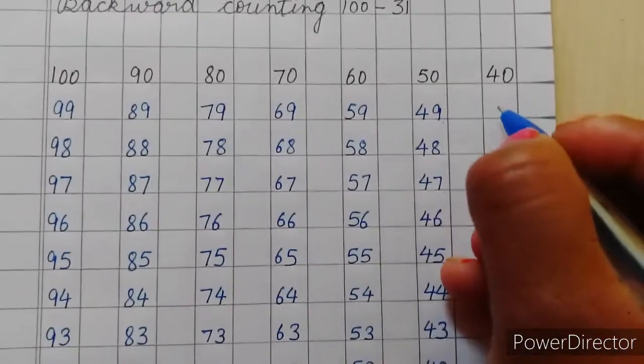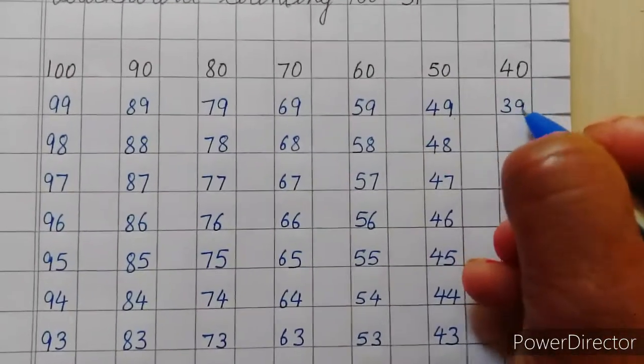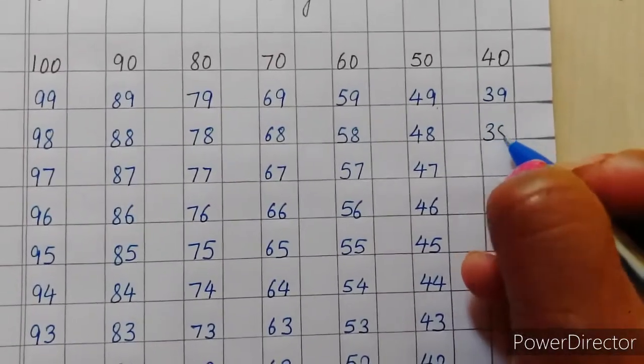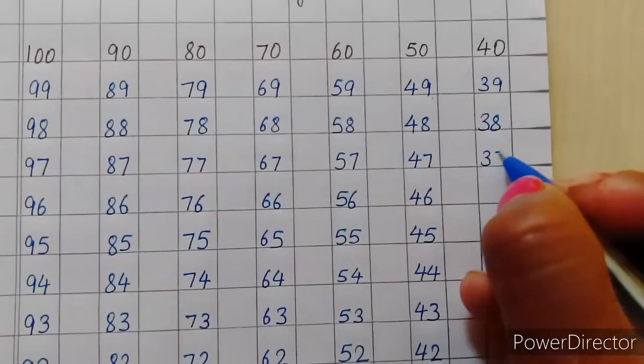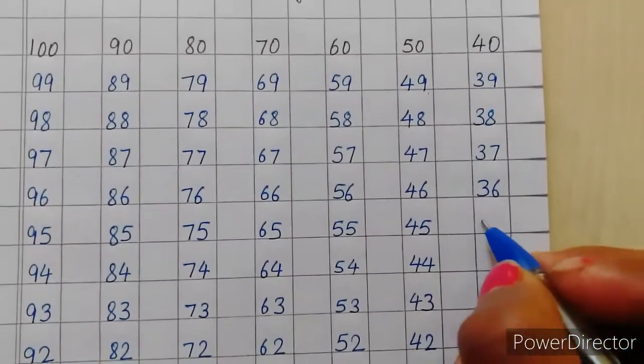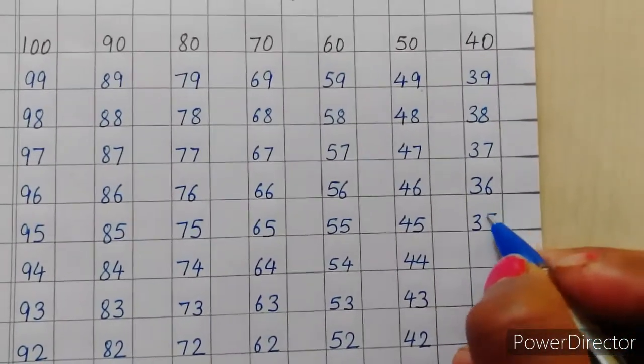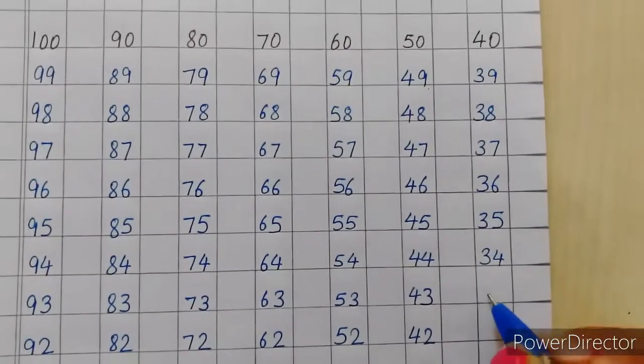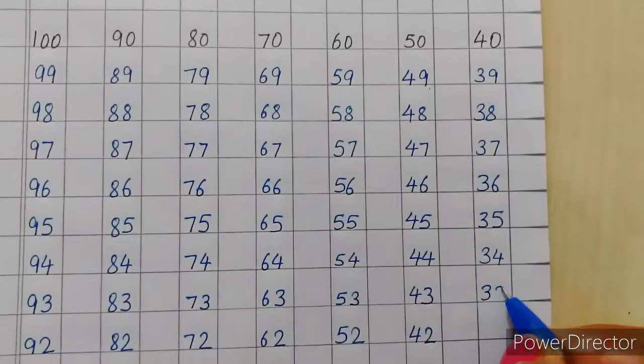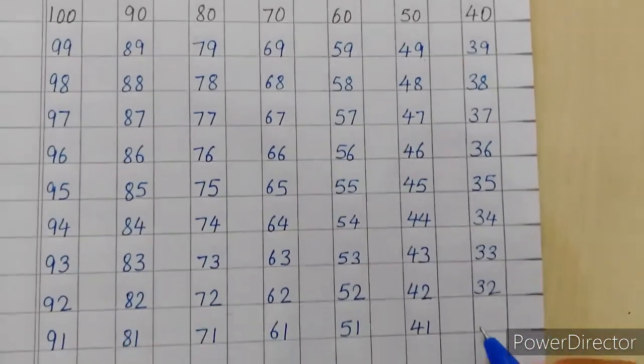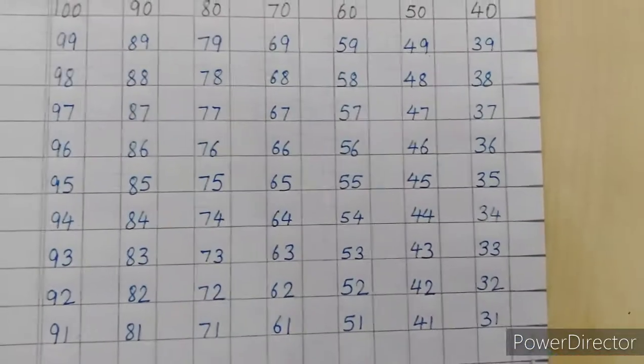Now 4, 0, 40. Aur 4 se pehle aata hai 3. To yahan par 3 ki line aayegi? 3, 9, 39, 3, 8, 38, 37, 37, 36, 35, 35, 34, 34, 33, 33, 32, 32, 31, 31.